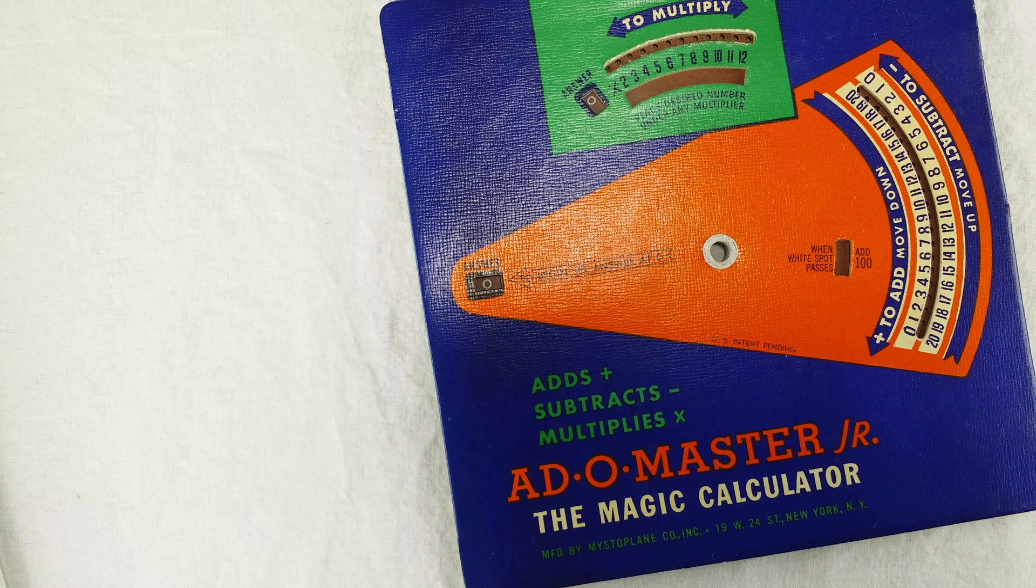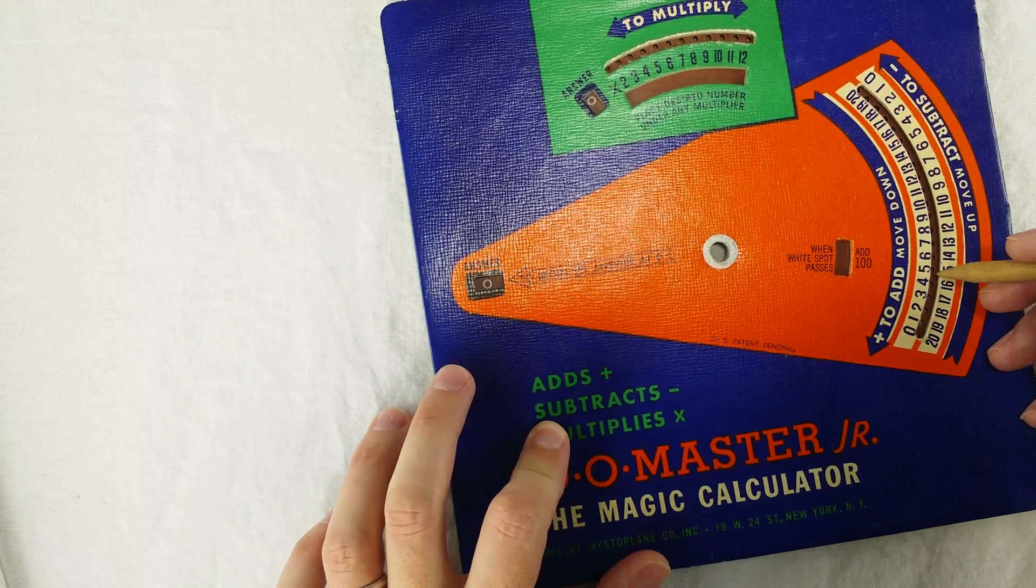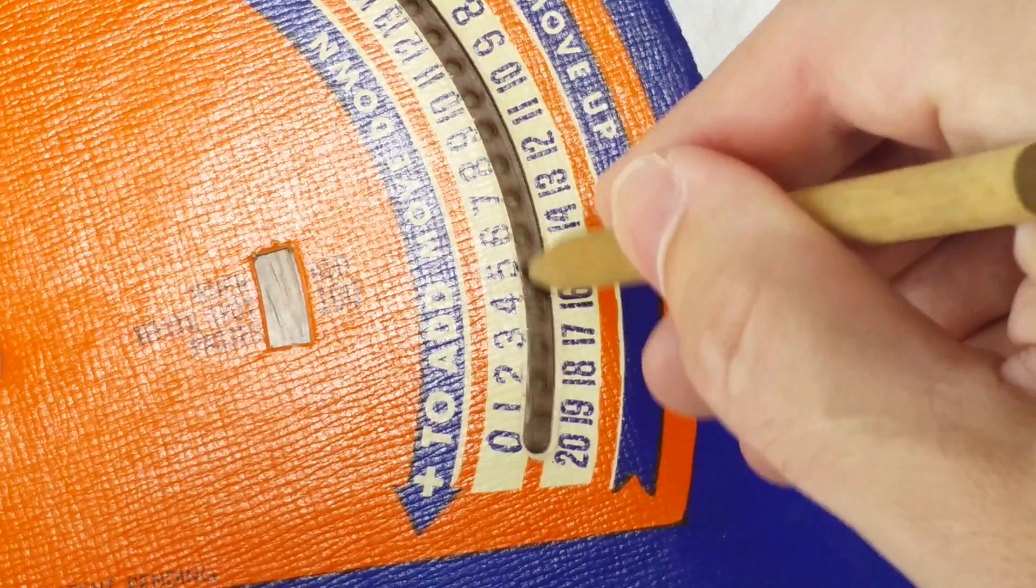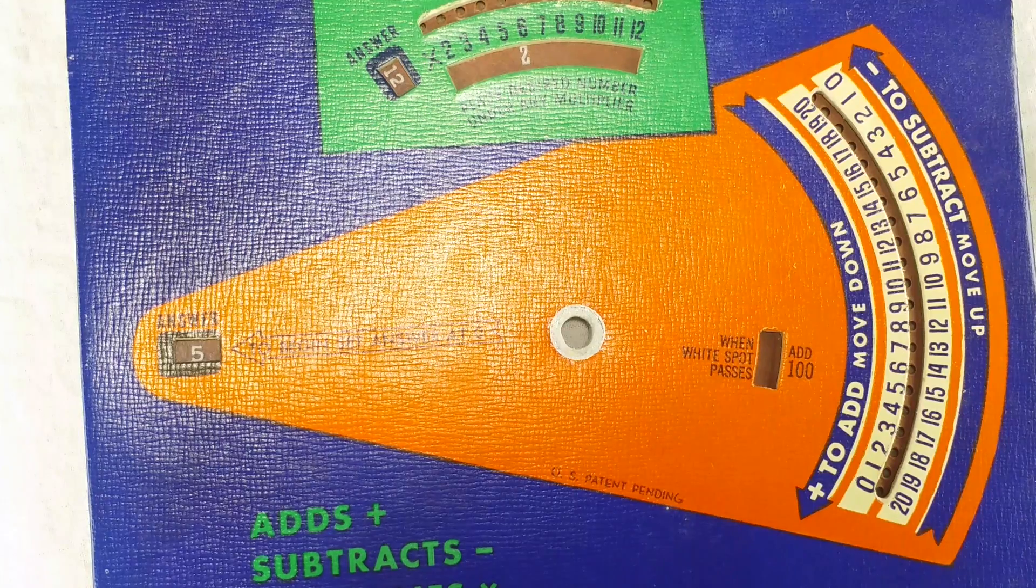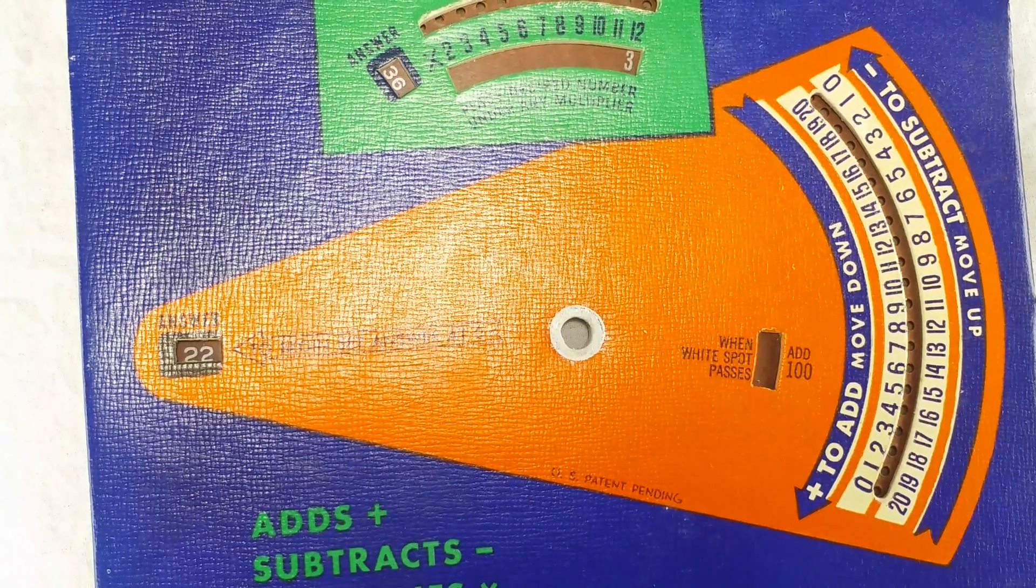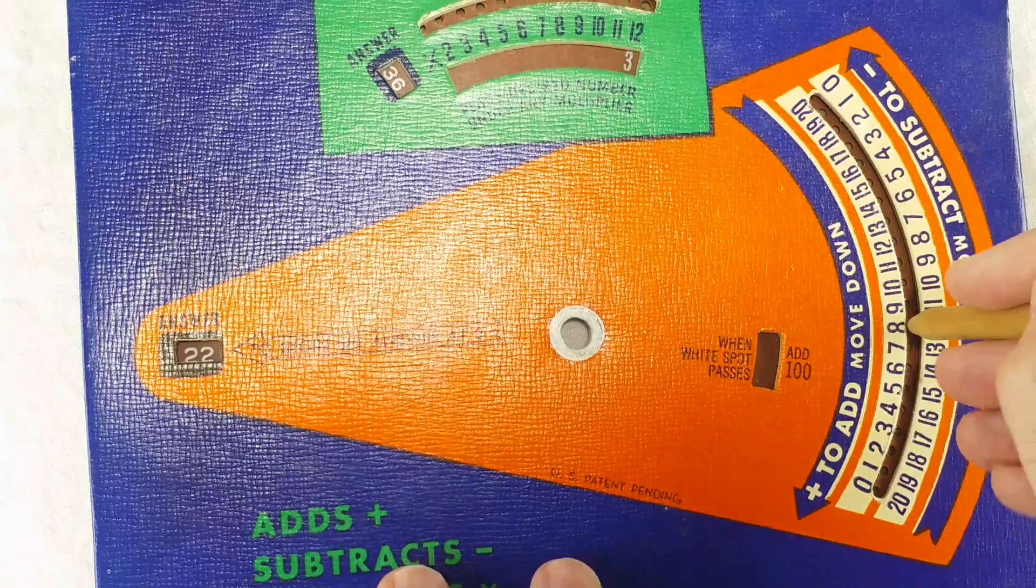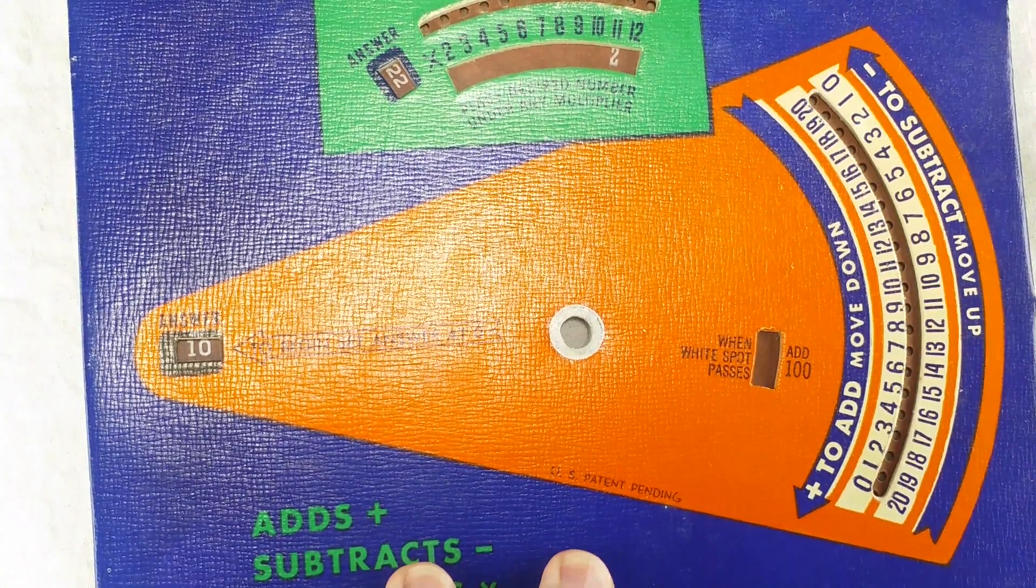The main operation for this thing is adding and subtracting. You start with the answer window showing zero, and then you add or subtract by sticking the stylus into the hole next to the number you want. So to add five, I do like this. And then I'll add 17 like this. And that's about it. You want to subtract, you read those numbers on the other side and turn the dial the other way. So here I have 22, and then I'll subtract 12, and you get 10.